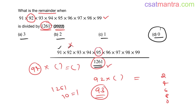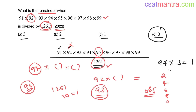95 into something will have 0 or 5 as the last digit — that fails too. 96 is divisible by 3, but 1261 is not divisible by 3, so 96 doesn't work. Now 97: to get last digit 1 from 97 × something, we need the multiplier to end in 3, since 3 × 7 = 21, giving last digit 1. So we try 97 × 13.